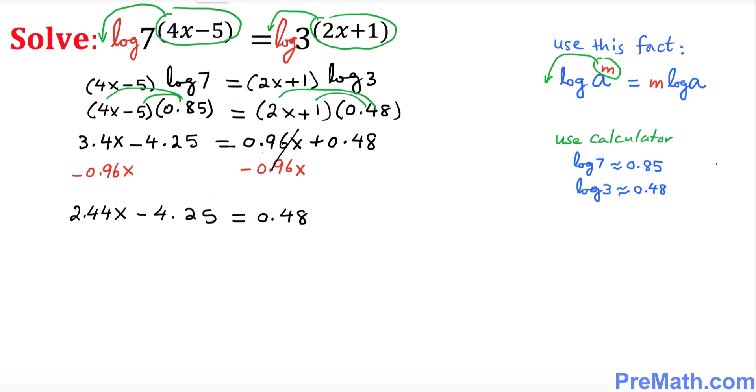Now add 4.25 on both sides, so the negative and positive are gone. We end up with 2.44x equals 4.73.